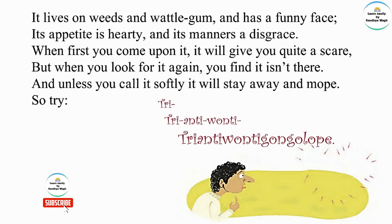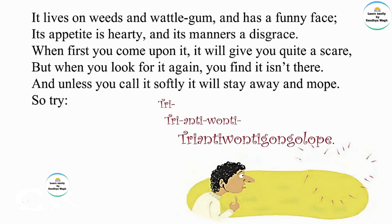When first you come upon it, it will give you quite a scare. But when you look for it again, you find it isn't there. And unless you call it softly, it will stay away and mope. Try, try, try anti-wanti, try anti-wanti gongolap! Here in this stanza, the poet is saying this insect lives on weeds and the gum from certain trees.